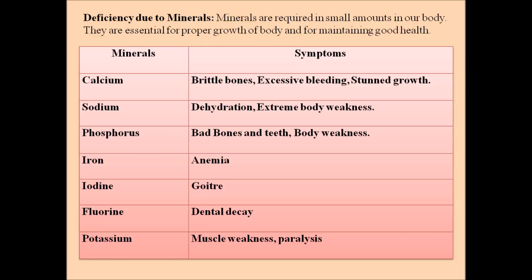Now let us discuss the deficiency due to minerals. Minerals are required in very small quantities by our body, but they are essential for proper growth and maintaining good health. Calcium deficiency leads to brittle bones, excessive bleeding, and stunted growth. Sodium deficiency leads to dehydration and extreme body weakness. Phosphorus deficiency leads to bad bones and teeth and body weakness. Iron deficiency leads to anemia. Iodine deficiency leads to goiter, fluorine deficiency leads to dental decay, and potassium deficiency leads to muscle weakness and paralysis.